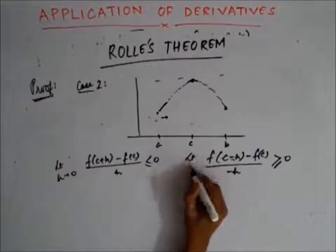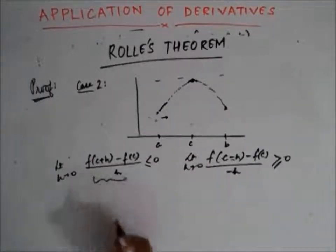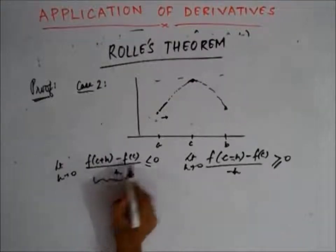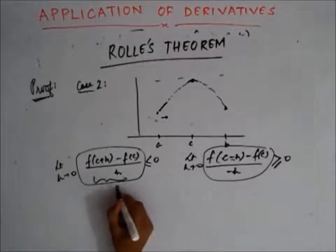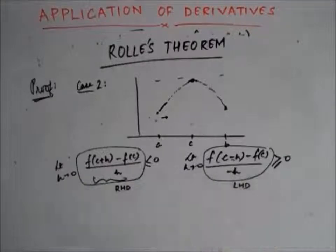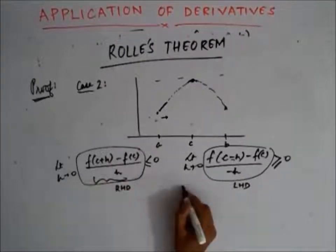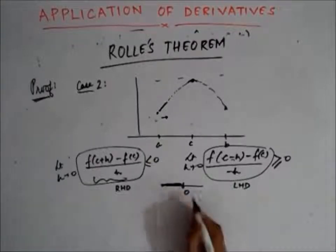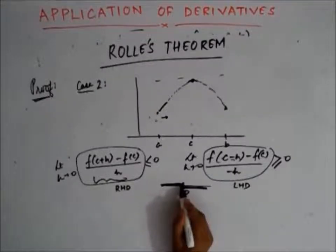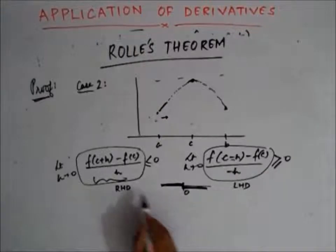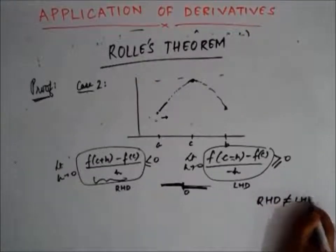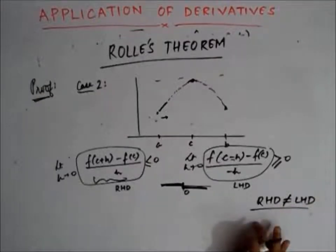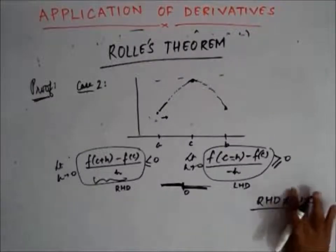Now taking the limit as h approaches 0, we recognize these expressions. The term [f(c+h) - f(c)] / h as h→0 is the right-hand derivative, and [f(c-h) - f(c)] / (-h) as h→0 is the left-hand derivative. If these two are not equal, that would mean the right-hand derivative is not equal to the left-hand derivative, which contradicts the statement that the function is differentiable.